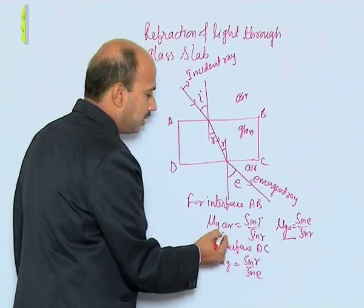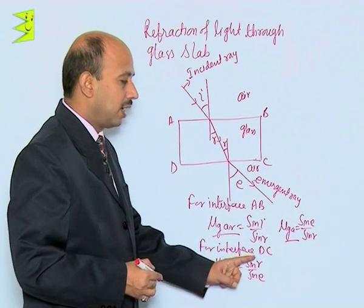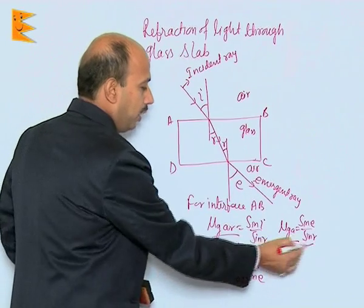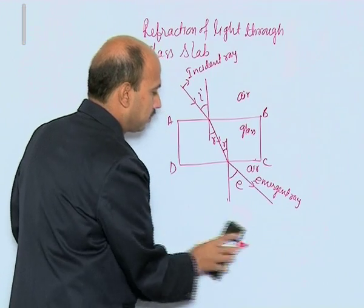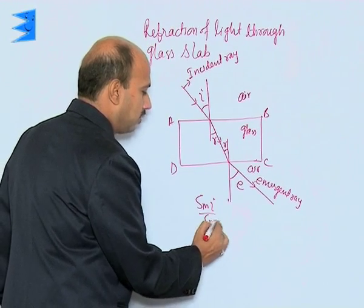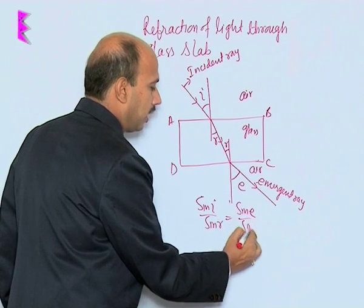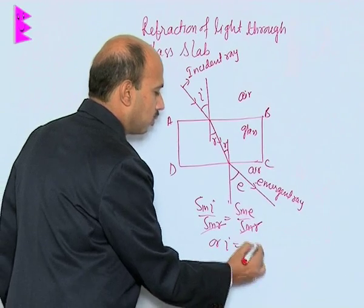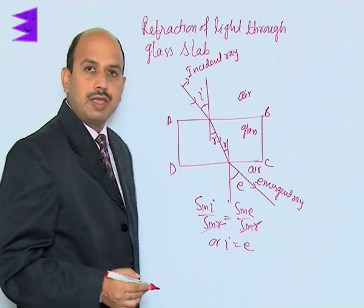Now, these two expressions are equal. So we can write sin I upon sin R equals sin E upon sin R. The sin R cancels, giving us I equals E — meaning the angle of incidence is equal to the angle of emergence.